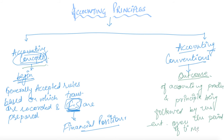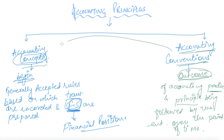Whatever principle the entrepreneur is practicing, and whatever outcome results from it, will be known as the accounting convention. So the classification of accounting principles has two parts: accounting concepts, which are the beginning, and accounting conventions, which are the outcomes. Now let's discuss the nature or features of accounting principles.